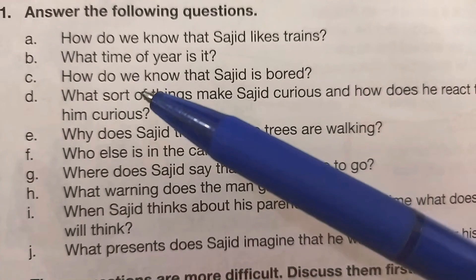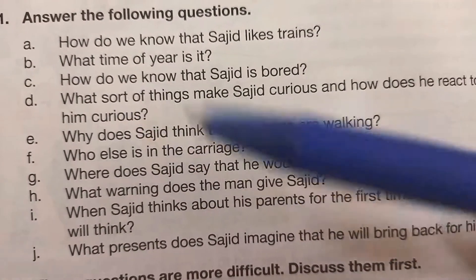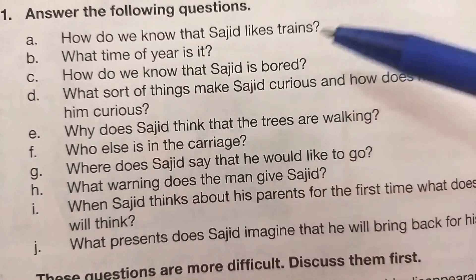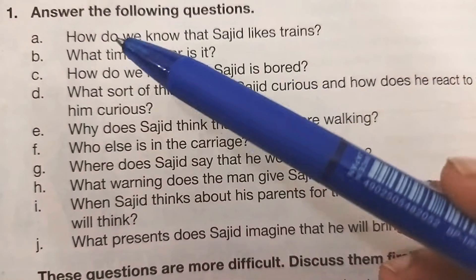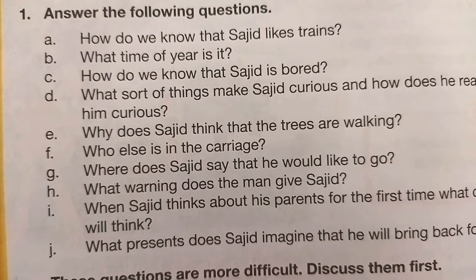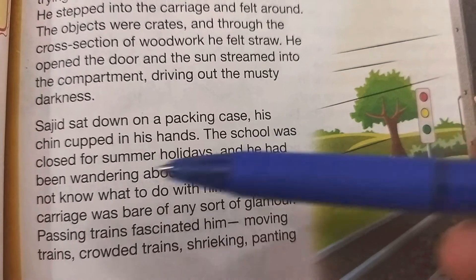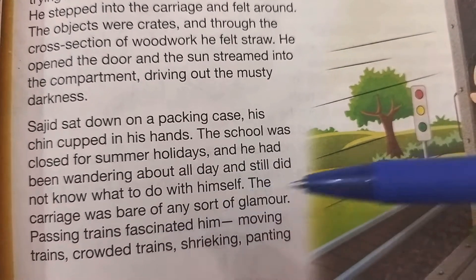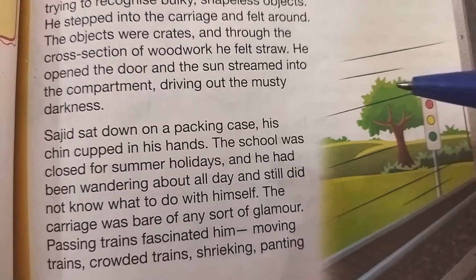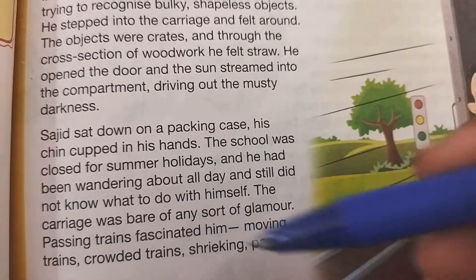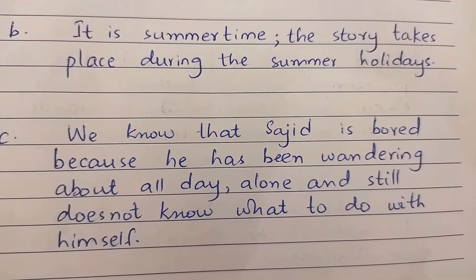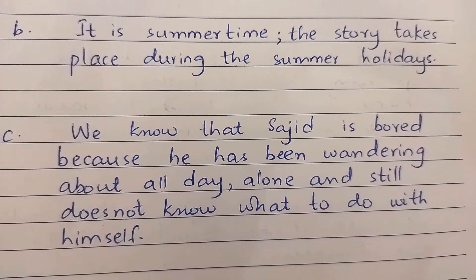Question number three, part C, says: 'How do we know that Sajid is bored?' We'll write the answer starting with the same phrase: 'We know that Sajid is bored because...' When a question starts with 'how,' we need to give a reason. The answer is that school was closed for summer holidays and he had been wandering about all day and still did not know what to do with himself.